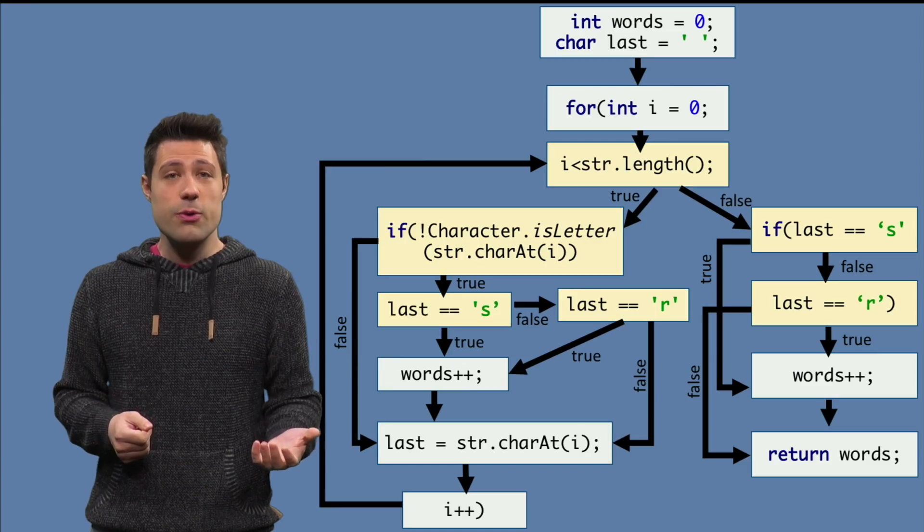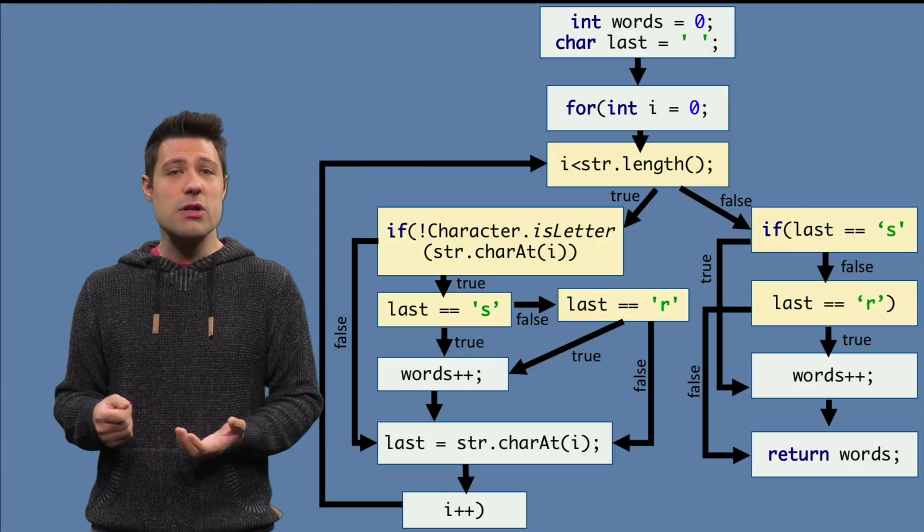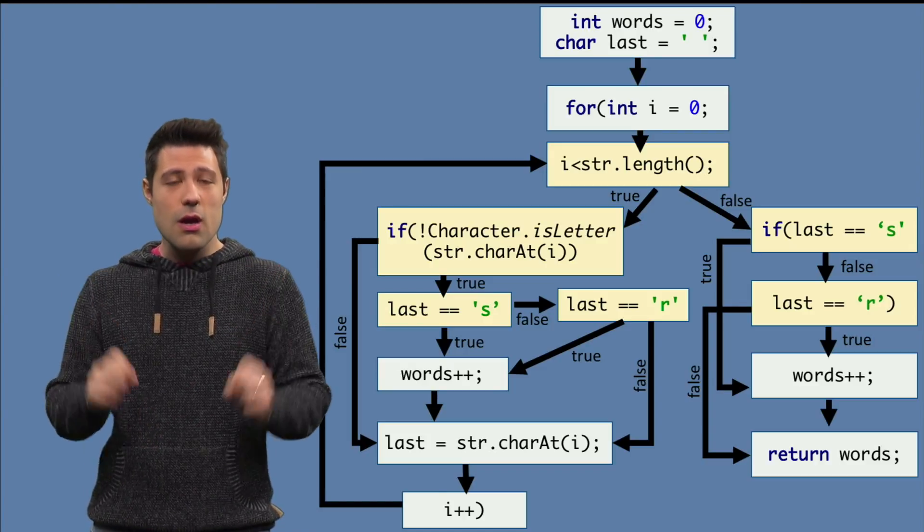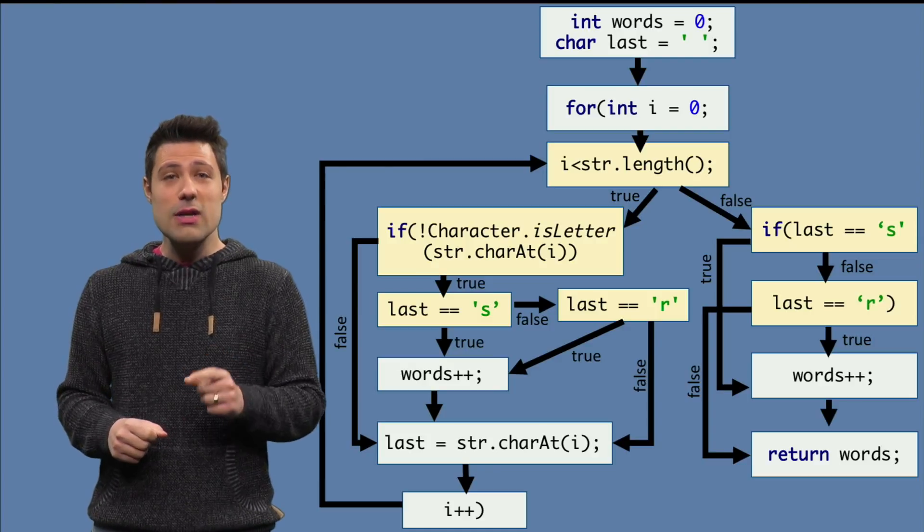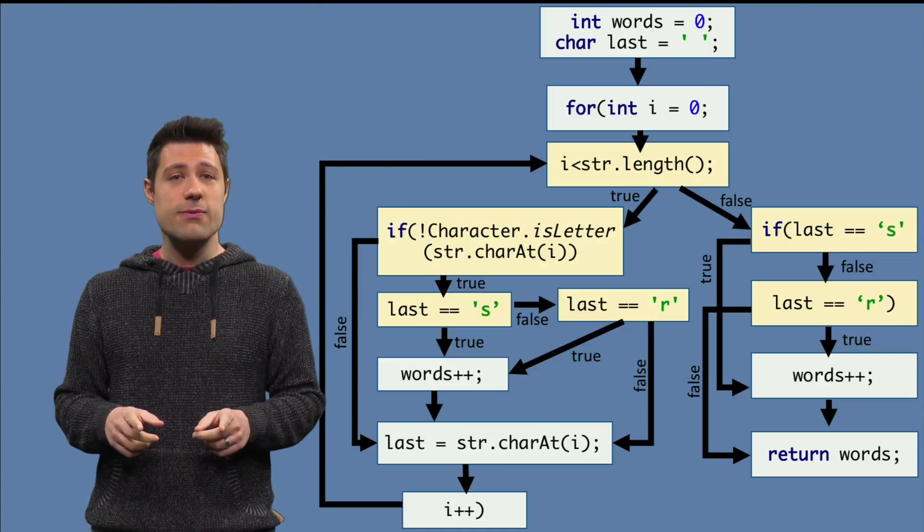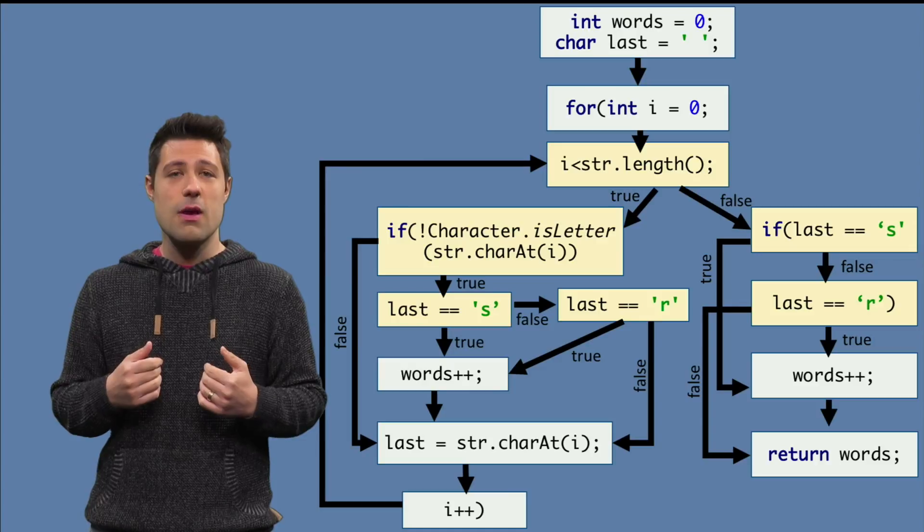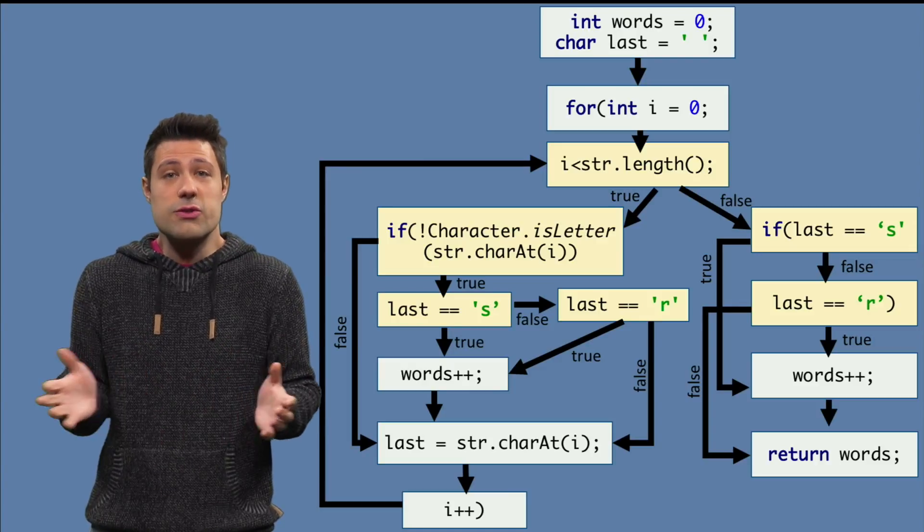If we go back to the initial program, but now with every single condition in a separate block, we see more edges to cover. Just count the number of arrows in this control flow graph and compare with the previous one, where the conditions were all in a single block.